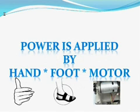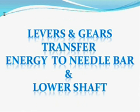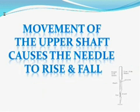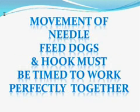The power is applied by hand, foot, or motor. The balance wheel turns the upper shaft. Levers and gears transfer energy to the needle bar and lower shaft. The movement of the upper shaft causes the needle to rise and fall. The movement of the lower shaft causes the feed dogs and the hook to move. The movement of the needle, feed dogs, and hook must be timed to work perfectly together.